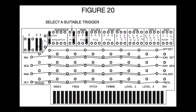Having the random voltage triggered by the pulse sequencer, sending out a pulse only on stage one, it changes the pitch offset once every five stages.